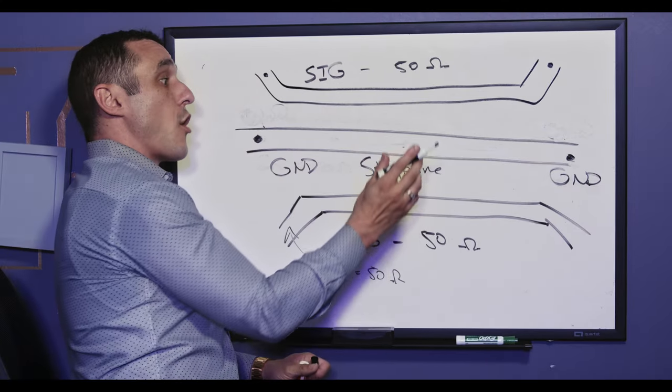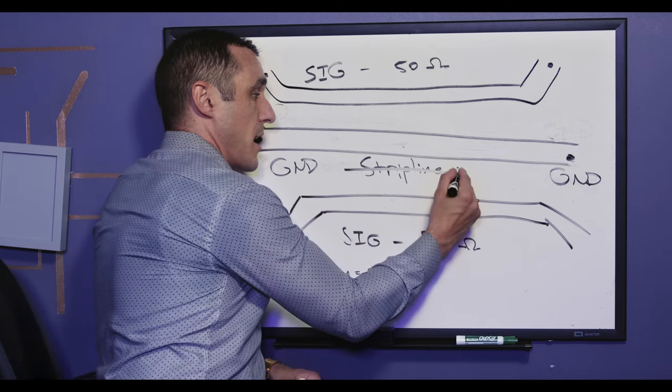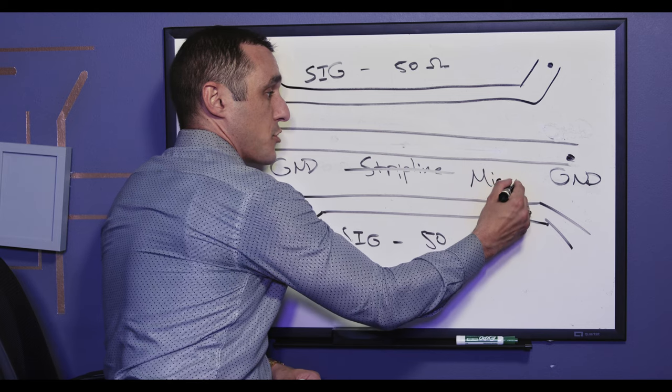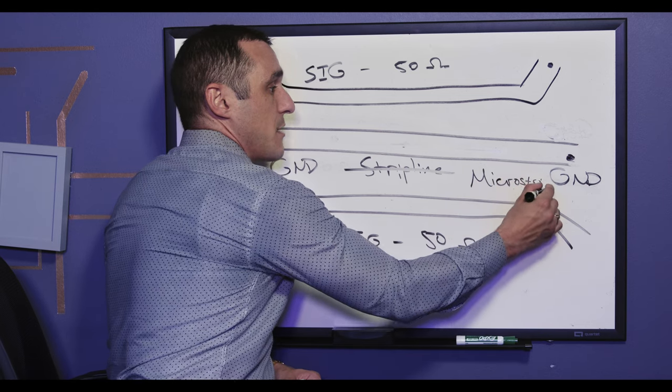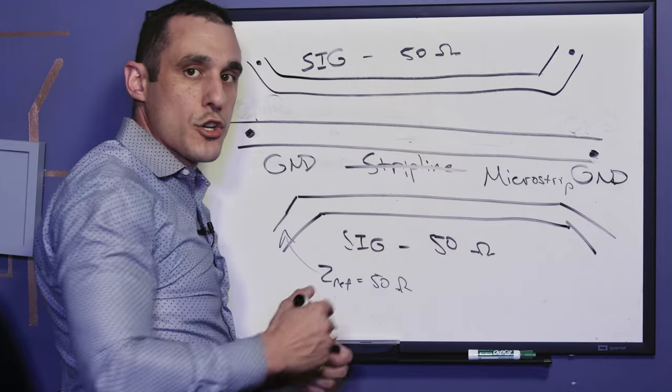Now Eric Bogatin also did this simulation in his Altium Live presentation. But instead of doing stripline, he was essentially doing microstrip, and he was doing this with copper pour, which is essentially equivalent to a much wider guard trace. So let's take a look at Eric Bogatin's results for this specific situation with a microtrace grounded at both ends.